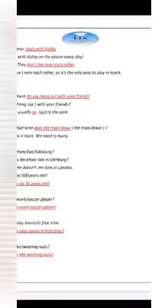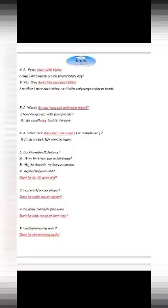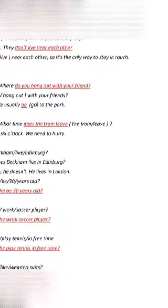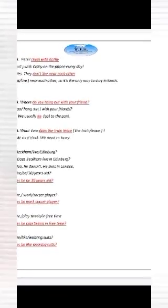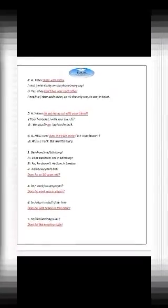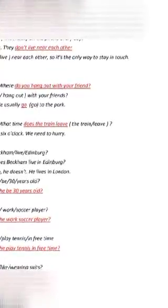To make a question in the present simple, I have to use do or does. With you, I use do: where do you hang out with your friend? We usually go to the park — no -s added because the subject is we. For 'what time does the train leave?' — the train means it, so I use does: what time does the train leave?